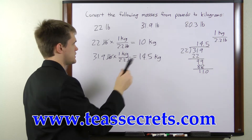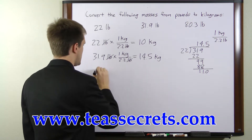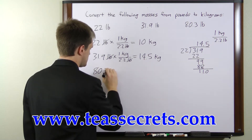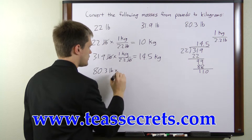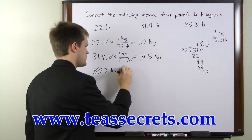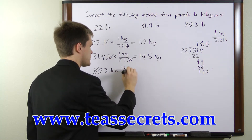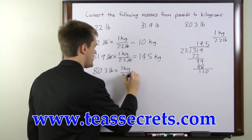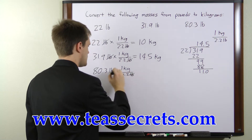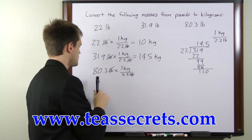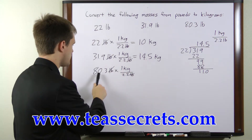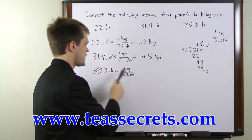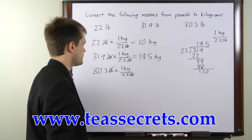Our final example is 80.3 pounds. We'll multiply it once again by the same conversion factor, 1 kilogram per 2.2 pounds. The pounds cancel, and we have 80.3 times 1 kilogram divided by 2.2.